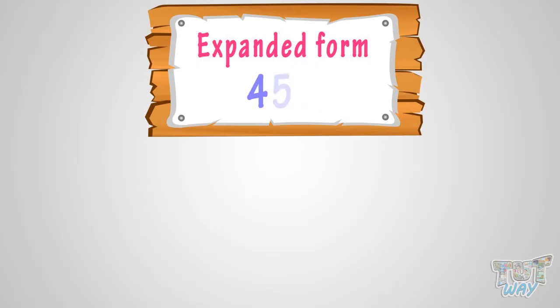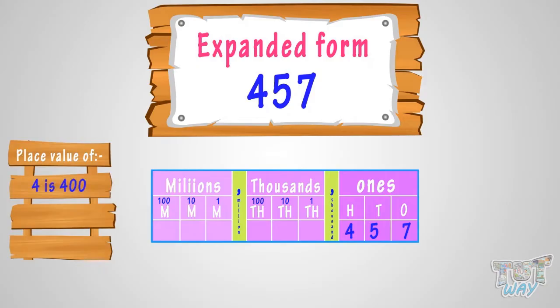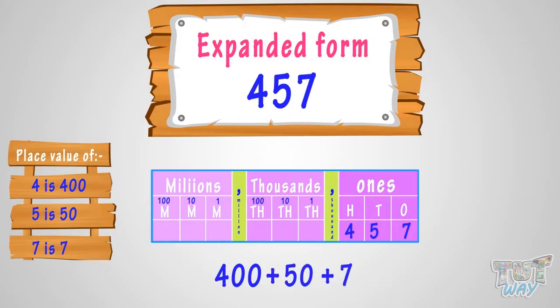Here we have a number. If we have to write this in expanded form, we will write the place value of each digit. The place value of four is four hundred, the place value of five is fifty, and the place value of seven is seven. So we write: four hundred plus fifty plus seven. This is the expanded form for four hundred and fifty-seven.